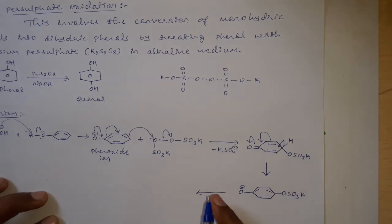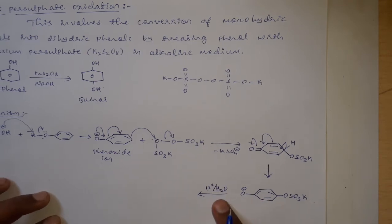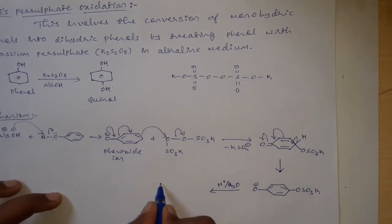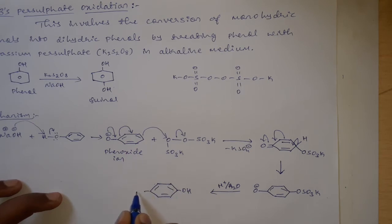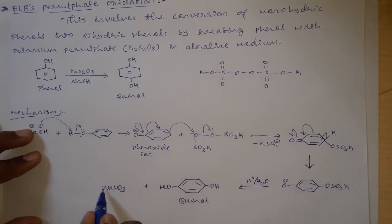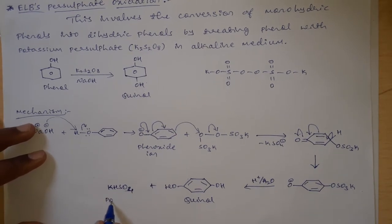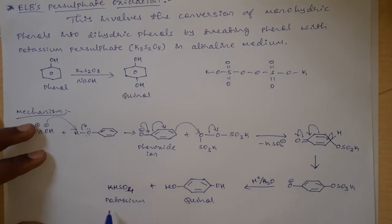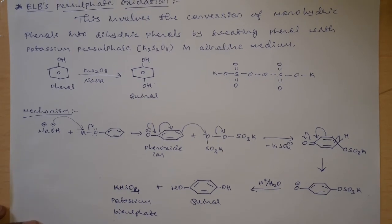This intermediate, on acid-catalyzed hydrolysis, gives the final product: quinol, which has two OH groups on the benzene ring. The other product formed is KH SO4, that is potassium bisulfate. This completes the reaction mechanism of Elbs' persulfate oxidation.